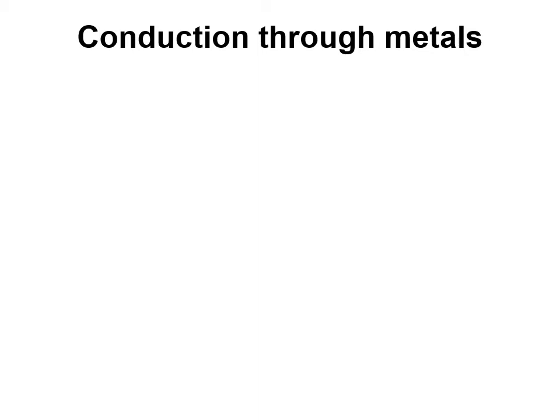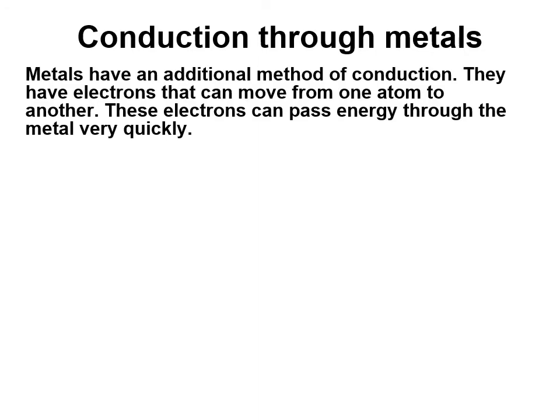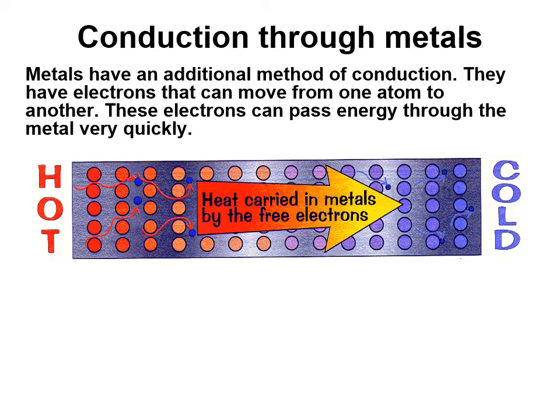A very specific type of conductor is metals, and metals conduct heat in a particular way. Not only do the metal atoms vibrate, but the electrons orbiting their nuclei can also move very quickly and jump between one metal atom and another. These electrons can transfer energy very quickly. In a hot metal rod, the electrons moving around the hot atoms can carry heat energy from the hot part of the rod to the cold part.